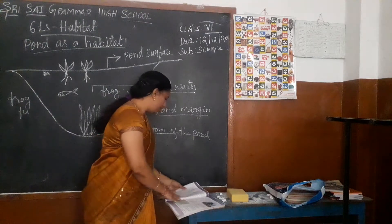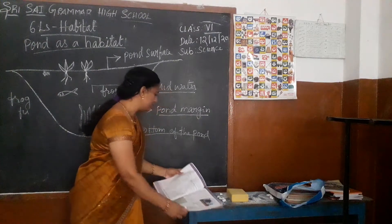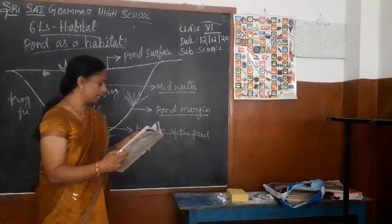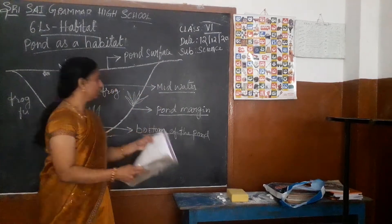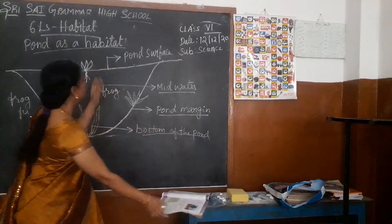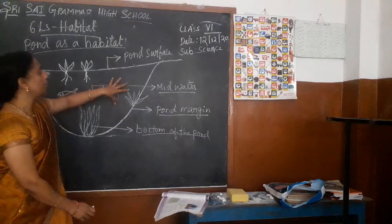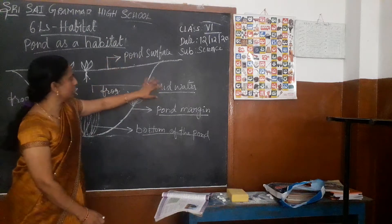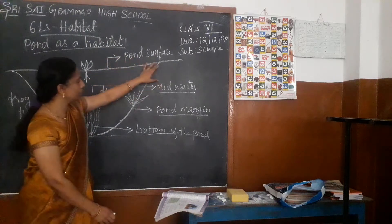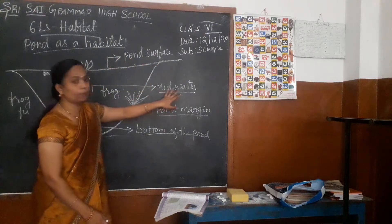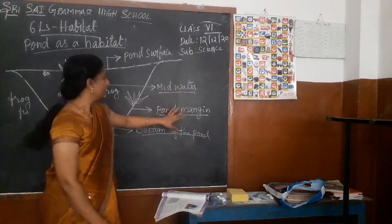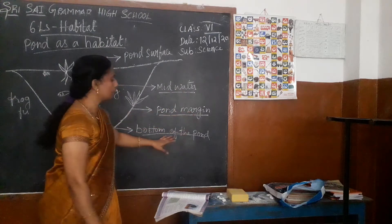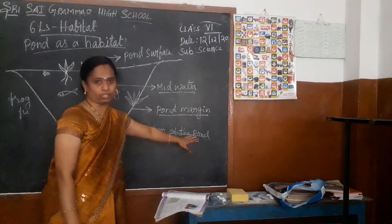Which animals and plants do you think would live in the pond margins? We have to see which type of animals and plants are living in the four zones: the pond surface, the mid water, the pond margin, and the bottom of the pond.